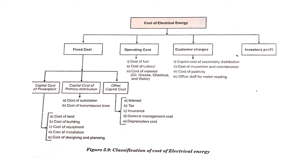The third cost category is customer charges — these include costs related to meter reading, maintenance, publicity, and other services directly related to customers. The last category is investor's profit — investors buy shares and receive profit from the company. All four major divisions — fixed cost, operating cost, customer charges, and investor's profit — together make up the total cost of electrical energy.